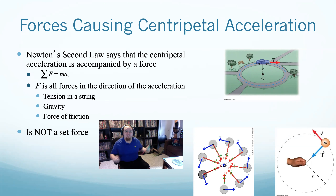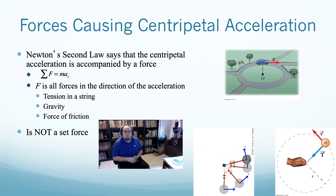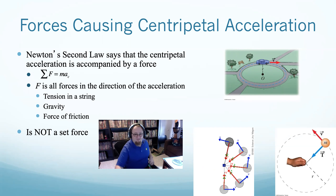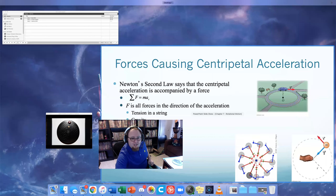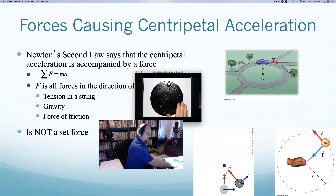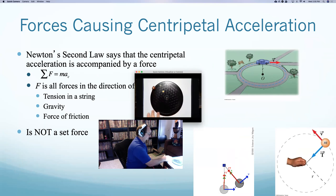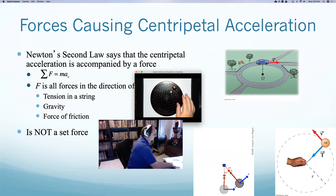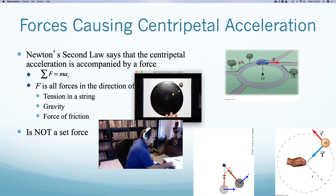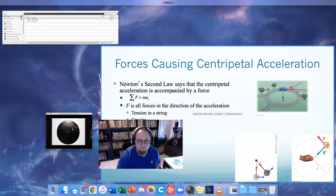It could be different forces causing the centripetal acceleration depending on the situation. Here with the string, it was tension. Sometimes it's gravity, which seems weird but is true. If I take this die and spin it slowly on a surface, friction is the centripetal force keeping it on the path. When I exceed the maximum friction, it goes flying off. As long as I go slow enough, friction keeps it on.